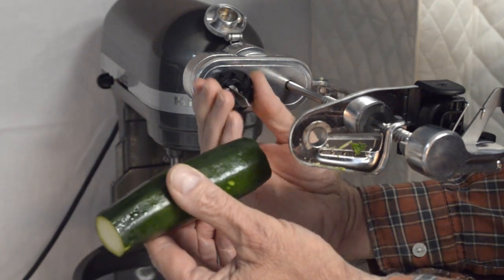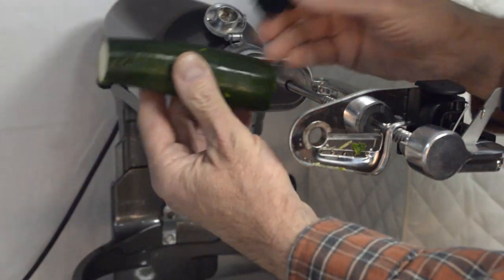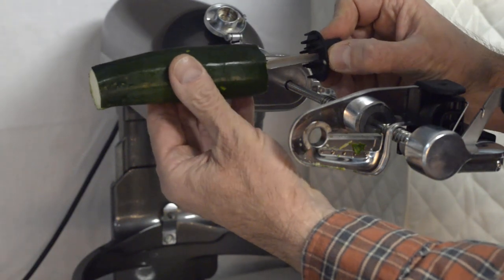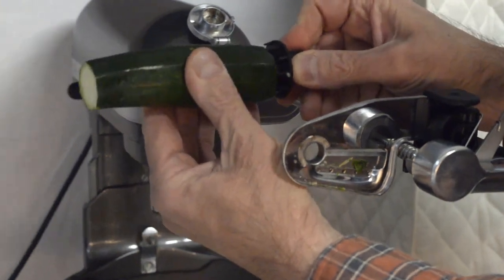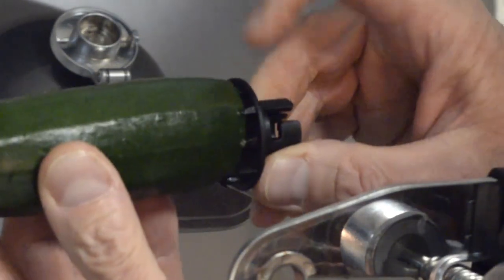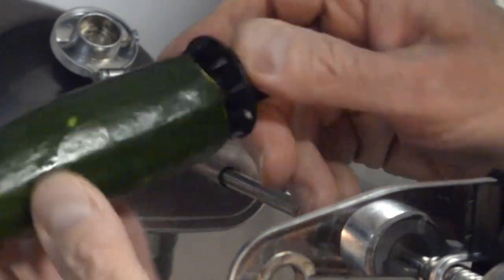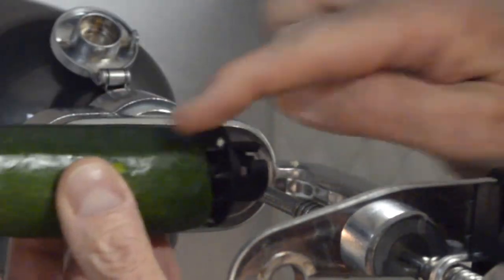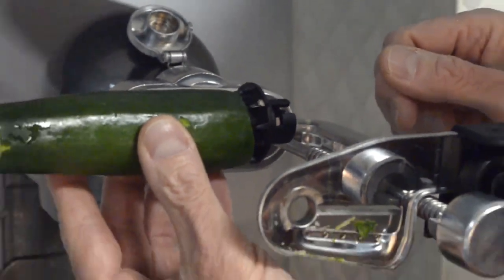And this is the last one. Again, I want the spindle as parallel to the center of the zucchini as I can. Again, it doesn't matter to me if the spikes are all the way into the zucchini. I'm more concerned with the spindle shaft being in line with the zucchini.